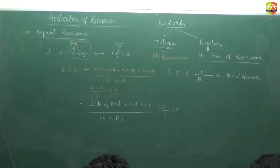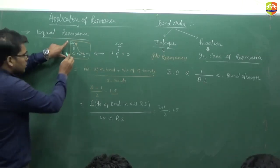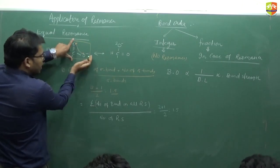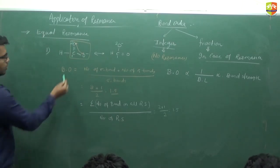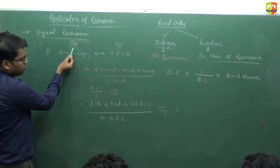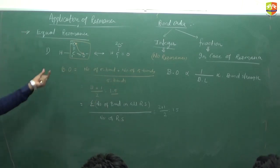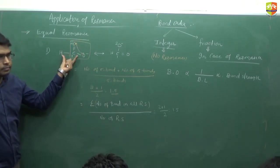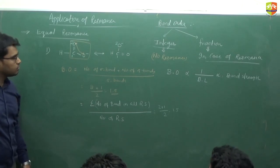A student asks whether hydrogen bonding is a sigma bond or a pi bond. The teacher explains that hydrogen bonding has sigma bond characteristics. For the first method, we take only the part of the molecule in which resonance is possible. If hydrogen is not part of the resonating region, we do not consider it. In this case, we have 2 sigma bonds and 1 pi bond in the resonance region.